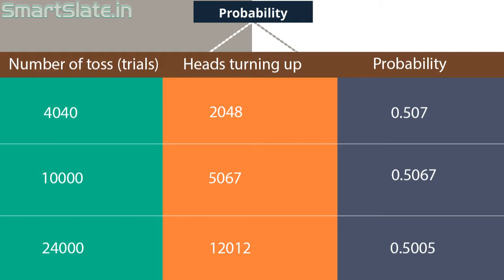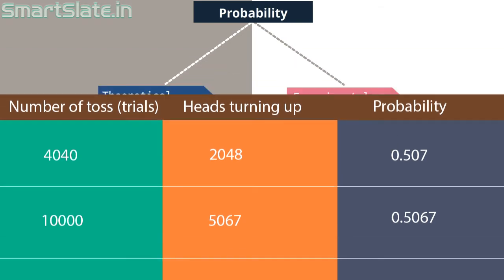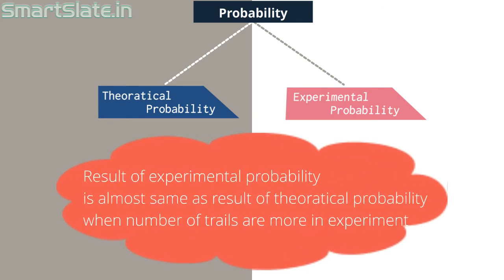What we observe here is from theoretical probability we saw that it was 0.5. And from experimental probability we observe that each time it was near 0.5. That is 0.507, 0.5067, and 0.5005. We can conclude that result of experimental probability is almost equal to theoretical probability when the number of trials or the number of experiments conducted is more.